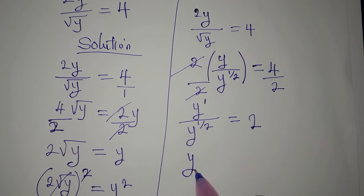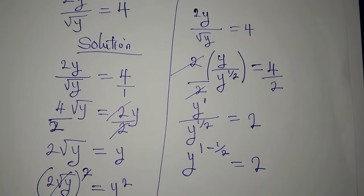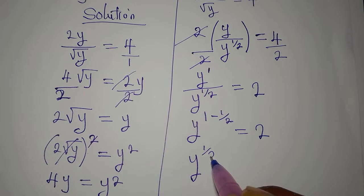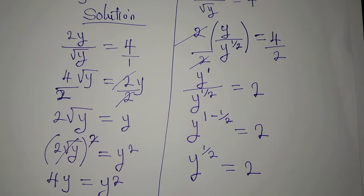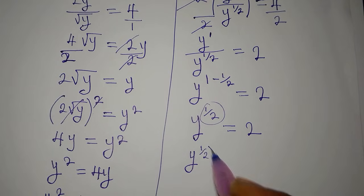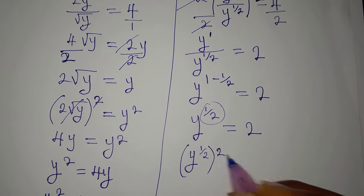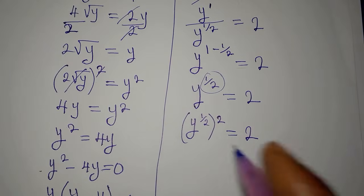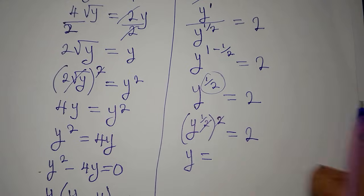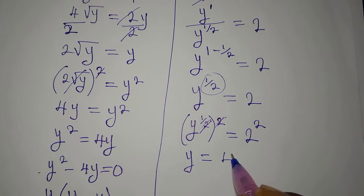Keeping the base y, we subtract the exponents: 1 minus 1/2, so y to the power of 1/2 equals 2. To remove the power of 1/2, we multiply the exponent by its reciprocal, which is 2. We square both sides — the left-hand side becomes y alone, and the right-hand side gives 2 squared equals 4.